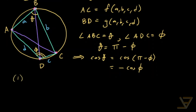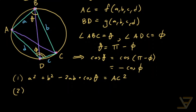Now we invoke the Law of Cosines. Applying it to angle ABC gives us: a² + b² − 2ab·cos θ = AC². Applying it to angle ADC gives us: c² + d² − 2cd·cos φ = AC².